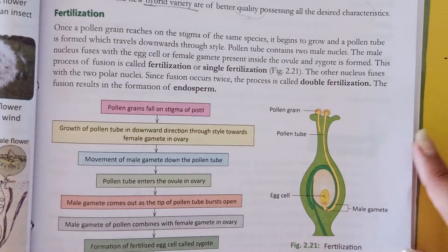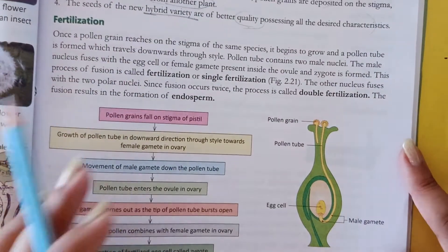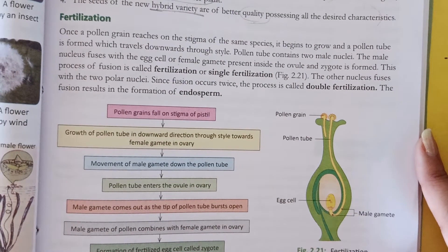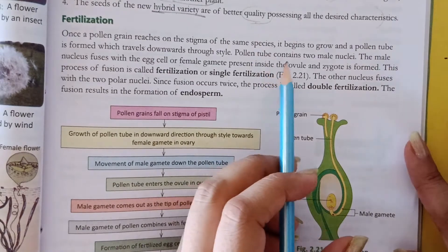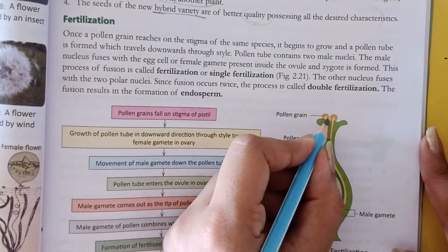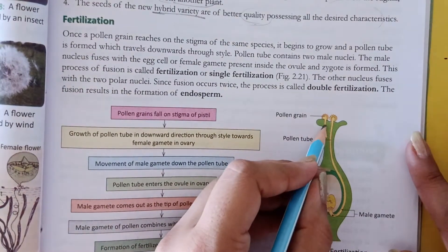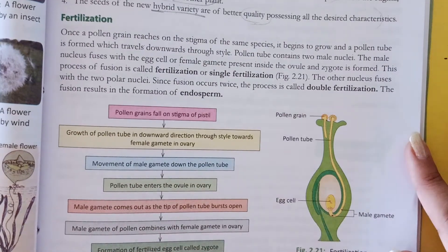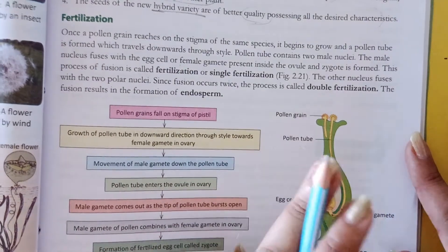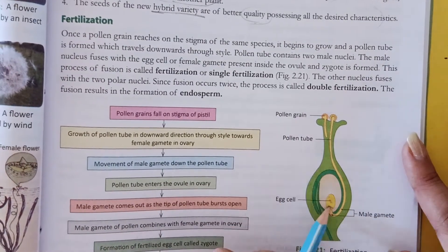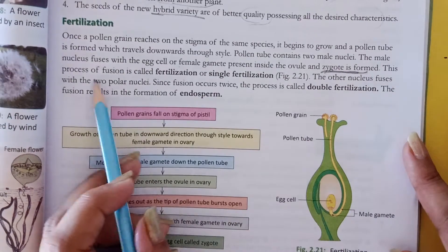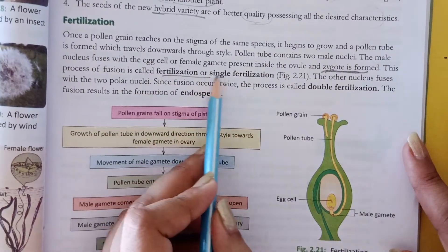Fertilization kya hota hai? Once a pollen grain reaches on the stigma of the same species — jab ek bar pollen grain pahunch gaya stigma mein, same species ki baat ho rahi hai — toh woh grow hona shuru ho jayega. Aur pollen tube — jab woh jaise pollen ke paas pahunch gaya, ek pollen tube release ho jayegi, matlab ek pollen tube form ho jayegi, jo ki poori style tak jayegi. Jo ye pollen tube hai, ismein two nuclei hote hai. Jo ek nucleus hai, woh egg ke saath fuse ho jayega, zygote form karega. Is process ko hum bolte hai fertilization or single fertilization.